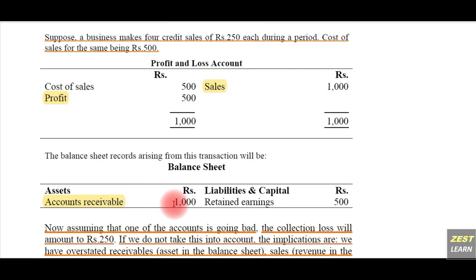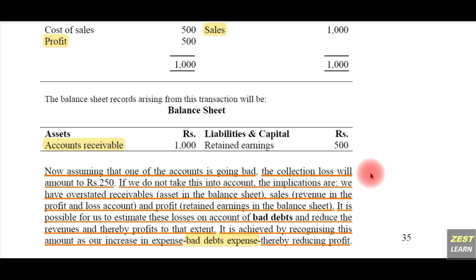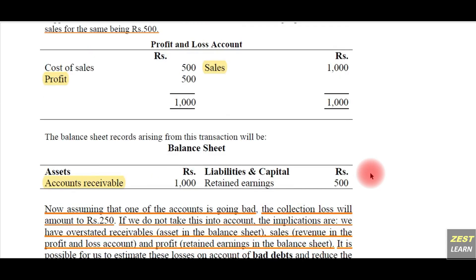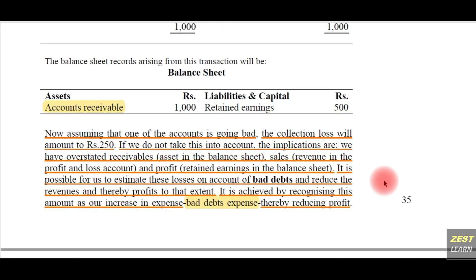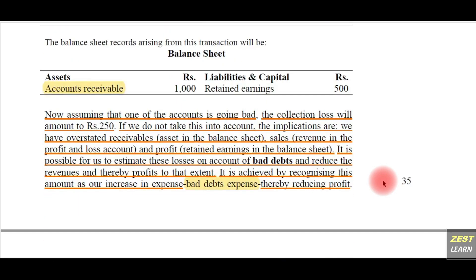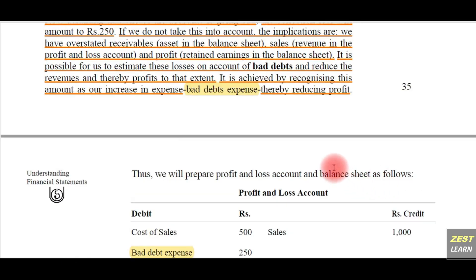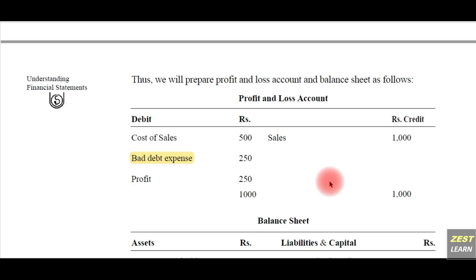The balance sheet shows accounts receivable of 1,000 rupees — cash not yet received — and retained earnings (profit) of 500 rupees. Now, what if the receiver of the goods does not pay at the later point of time? There is a real possibility that the person who received the goods will not pay. In such a case, the profit of 500 rupees and accounts receivable of 1,000 rupees will be an overestimation. To avoid this unfair representation, we must show estimated or probable losses in the present accounting period itself — that is the presentation of bad debts in the profit and loss account.